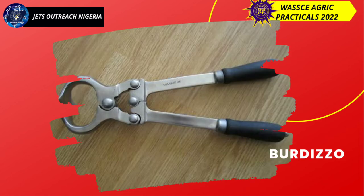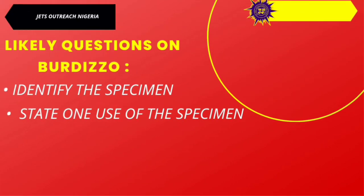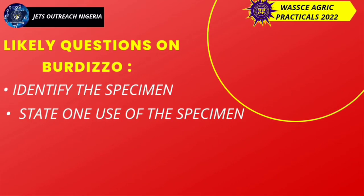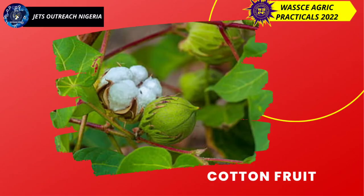First on our list is the bodizo. Likely questions that can follow are: identify the specimen, state one function of the bodizo. Your answer is: the bodizo is used in castration. Next is the cotton fruit.